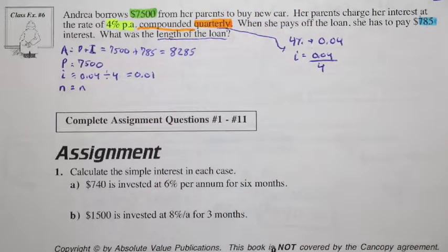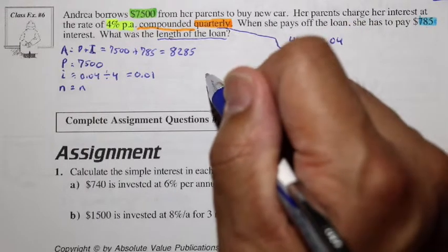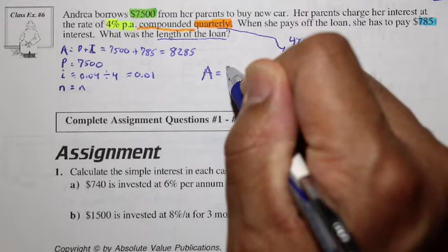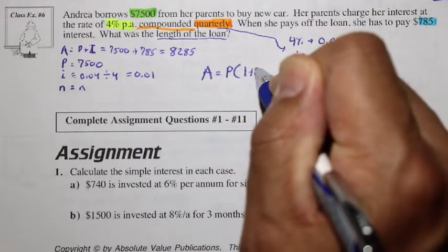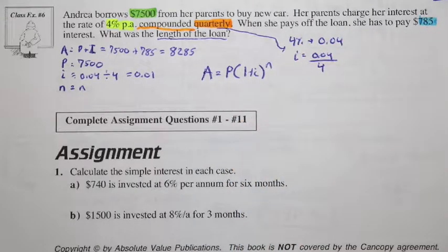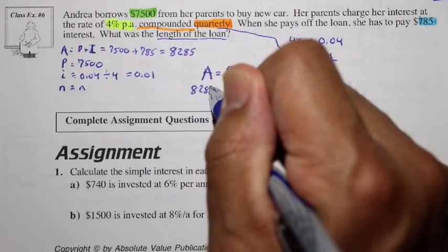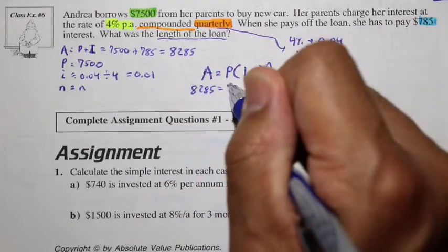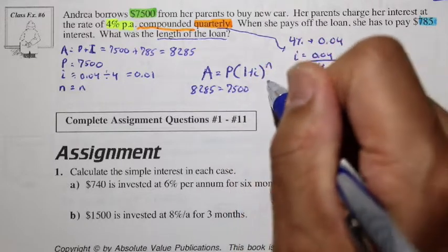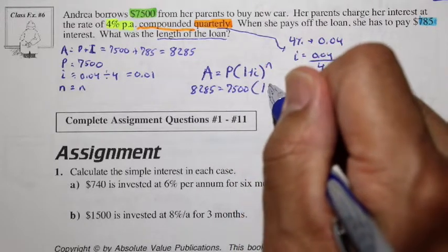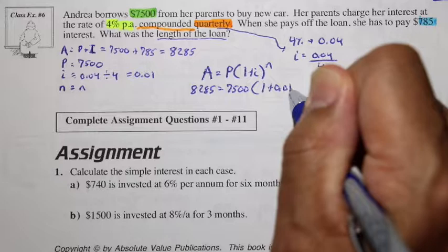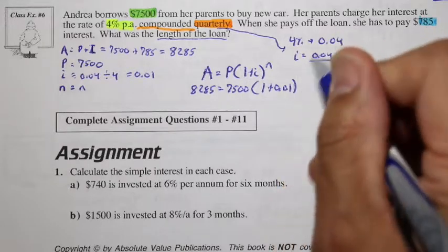Okay, can we calculate our formula then? A is equal to P times 1 plus I to the N. And let's fill in our pieces of information. We have 8,285, which is equal to our principal of 7,500 times 1 plus 0.01 to the exponent N.